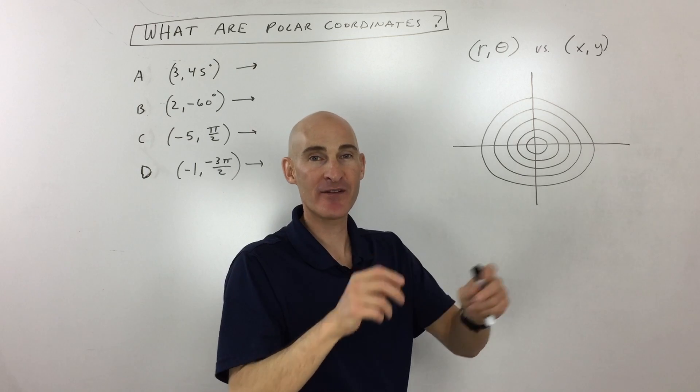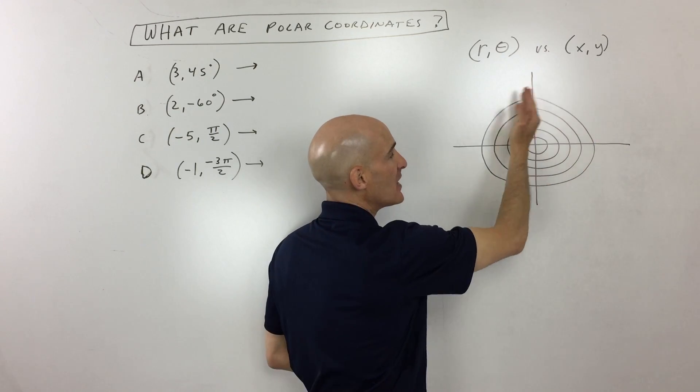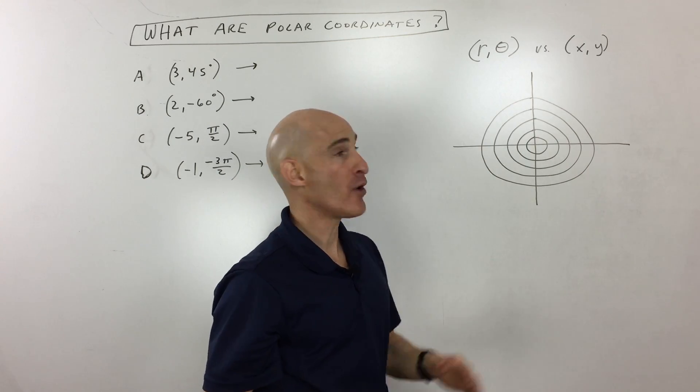It's kind of like one of those etch-a-sketches. You can only go left and right, up and down. Here with polar, what we're doing is we're actually talking about a circular way of locating a point.